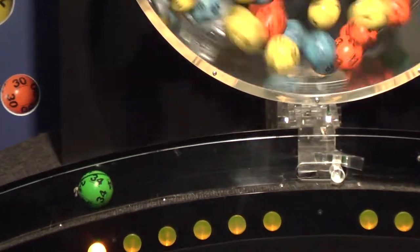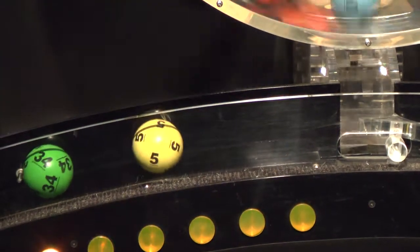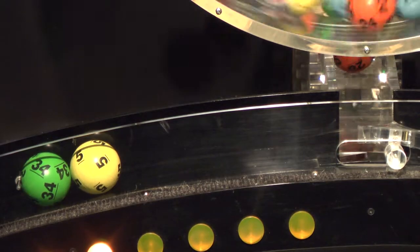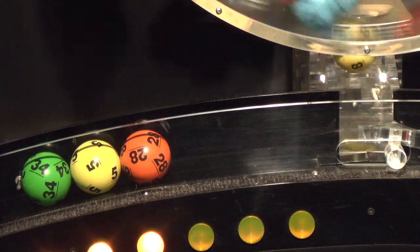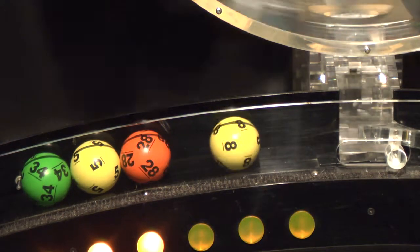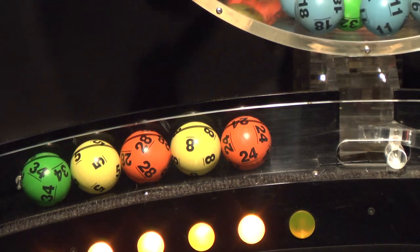Our first number up is number 34 and right behind that we have number 5. Following that we have number 28. Up next is number 8 and the final ball in the sequence is number 24.